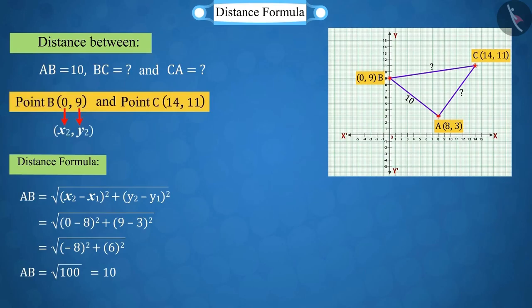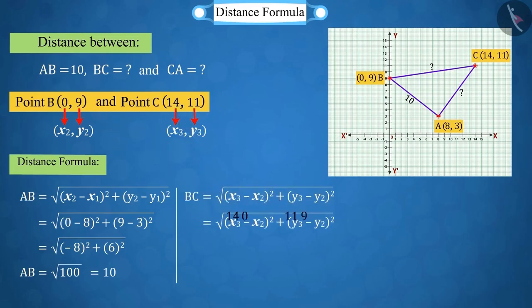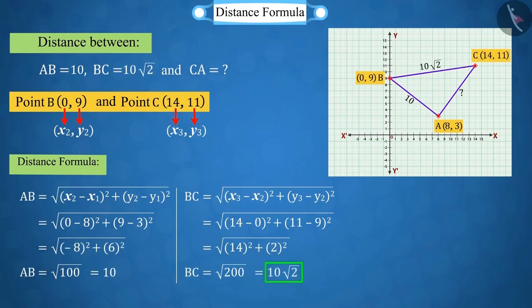Similarly, the coordinates of point C are x3 equal to 14 and y3 equal to 11. According to the distance formula, we get the measure of BC as 10 root of 2.